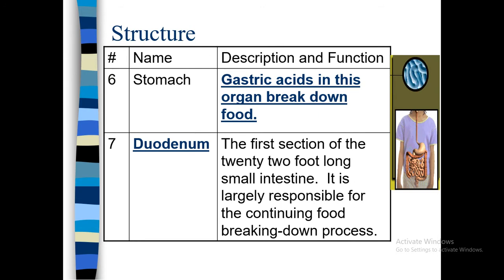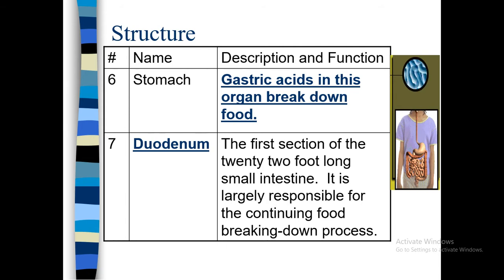Next is the stomach. The stomach produces gastric juice, which is called gastric acid. In this organ, food is further broken down into tiny pieces.